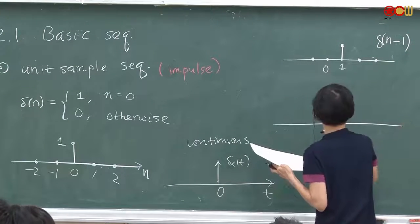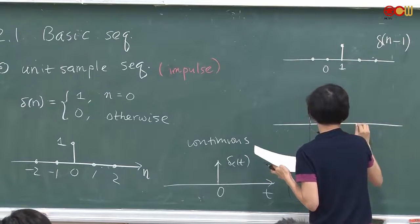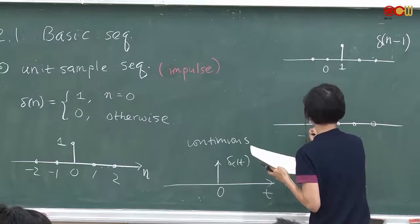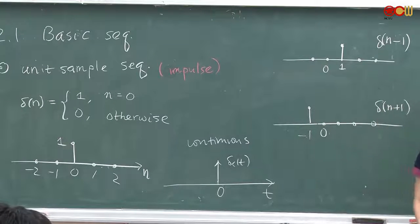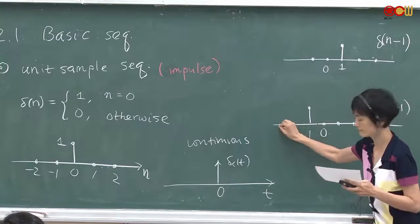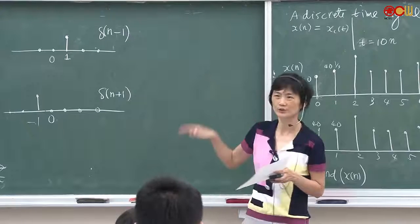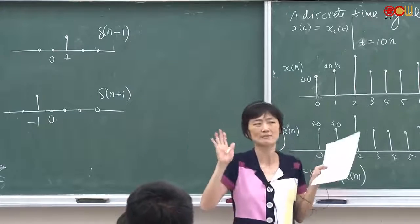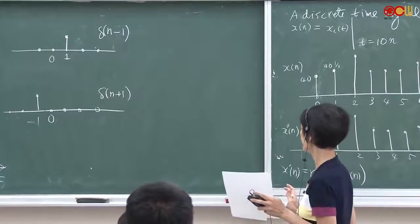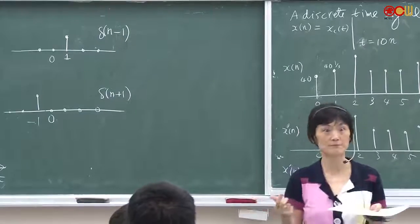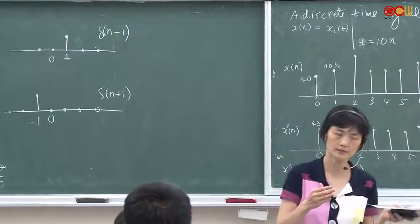We can also shift it to the left. So at position minus 1, that would be delta(n plus 1). These are called shifts in mathematics. A shift to the right and a shift to the left have different meanings.